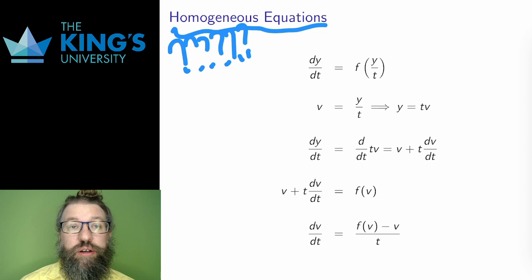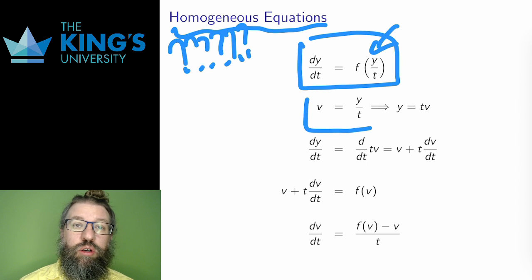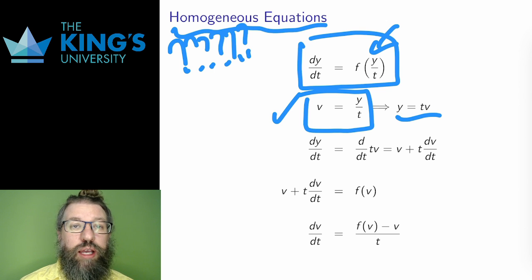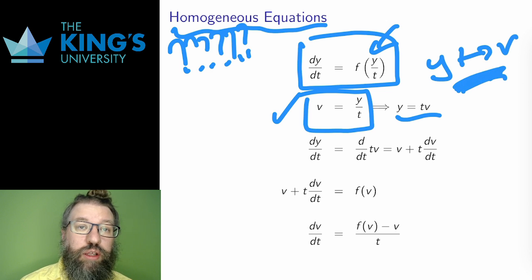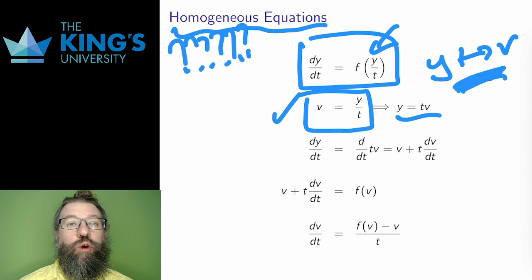The type of equations we're talking about here are dy/dt equals some function of the expression y over t. As long as you can do that, the substitution v equals y over t, or equivalently y equals tv, will improve the equation. I'm taking the function y of t and replacing it with v of t to get a new differential equation for v. Hopefully that new equation will be easier, and then I can reverse the substitution to find y.